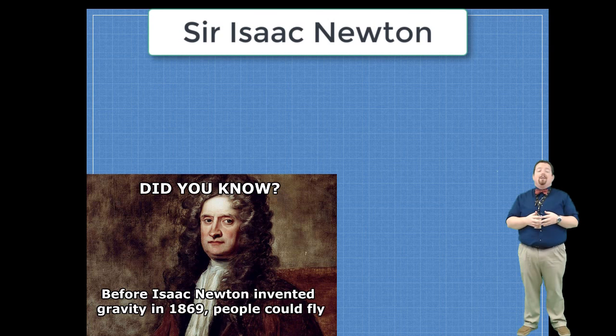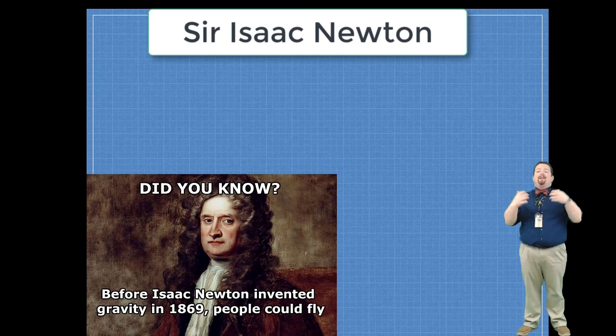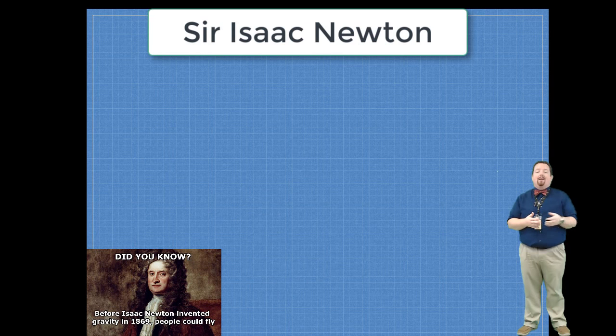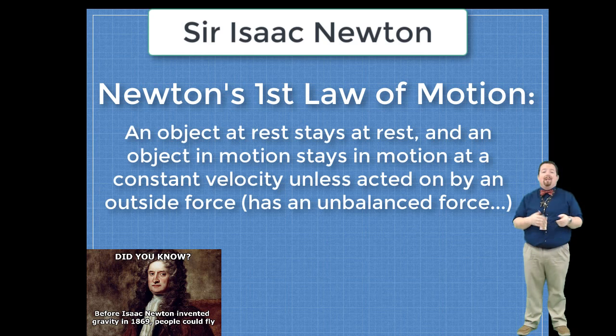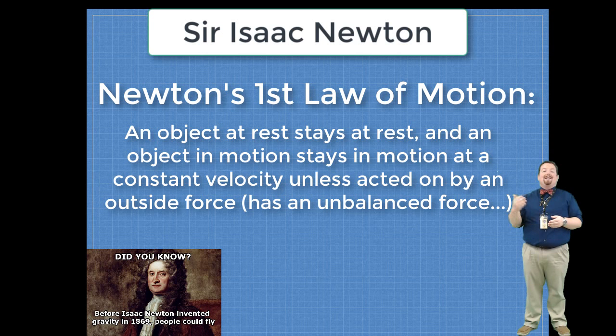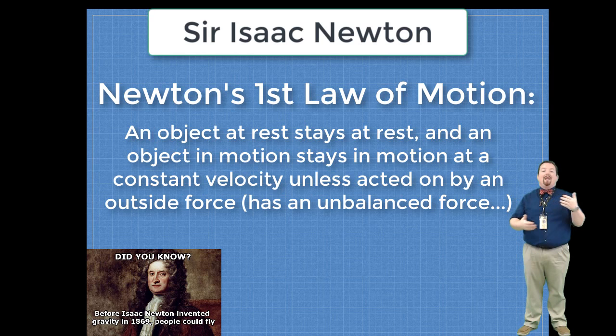Later on, Sir Isaac Newton came up with a revised theory of Galileo's, and he called it Newton's First Law of Motion. Newton's First Law states that an object at rest stays at rest, and an object in motion stays in constant motion or constant velocity unless it's acted on by some outside force.